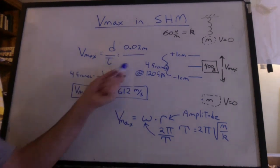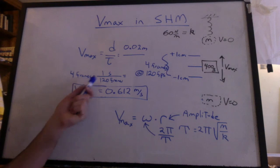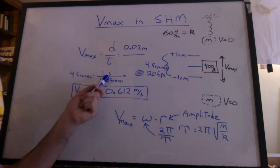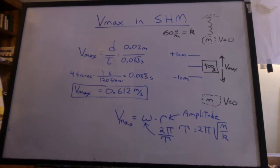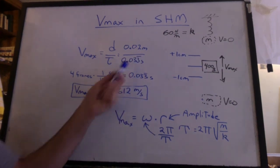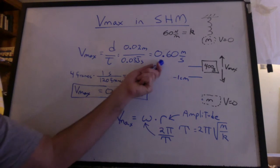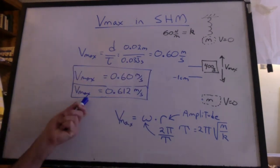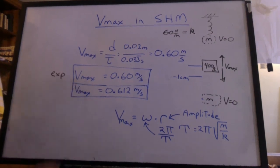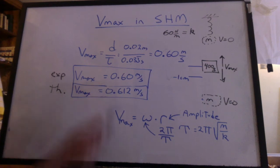The distance is 2 centimeters or 0.02 meters. And to get the time, we can take the four frames and multiply by one second over 120 frames. The frames cancel out, leaving us with seconds, giving us 0.033 repeating. And that's how many seconds I have. That gives us 0.6 meters per second. Let's compare. That's the experimental Vmax. That's the theoretical Vmax. Pretty close.